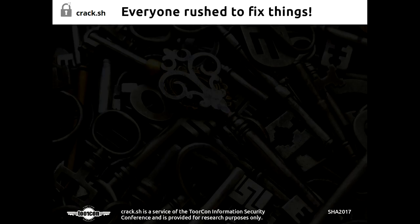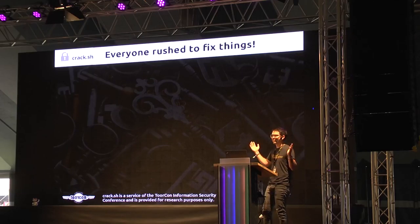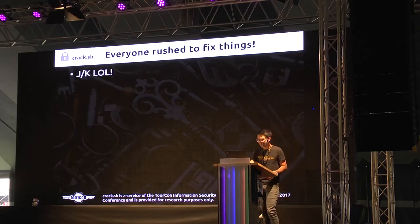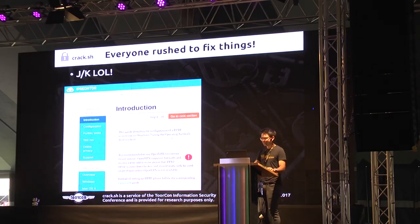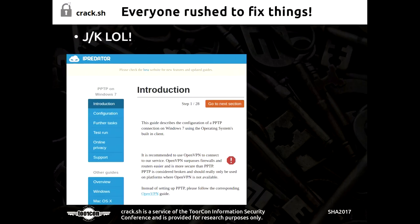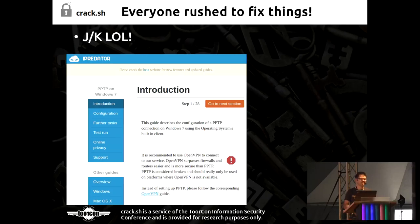After we gave this talk in 2012, everybody rushed to fix everything, right? One of the bigger VPN providers we specifically pointed out — iPredator — had many customers vulnerable to this. Their fix was basically just a post on their web page saying they recommend you don't use PPTP VPNs, but they still offered the service, so everybody kept on using it.